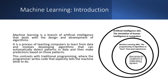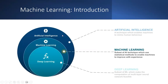Machine learning involves developing algorithms that automatically detect patterns and make predictions. This contrasts with traditional programming, where experts write code that tells the machine what to do. In machine learning, the machine tells us what the results will be — which makes it far more interesting than traditional programming.